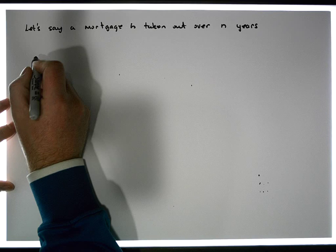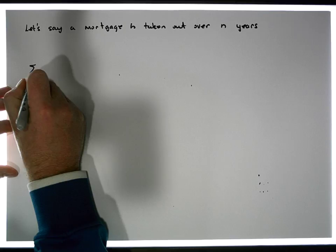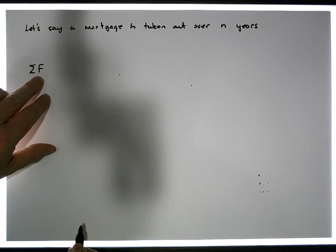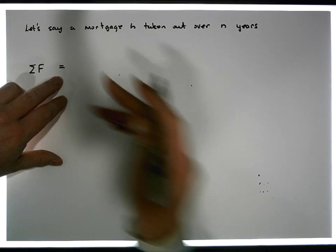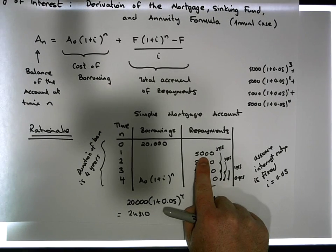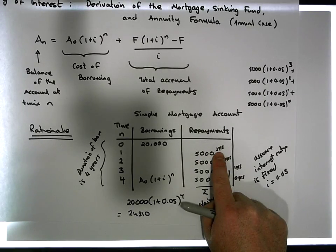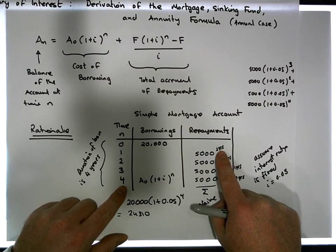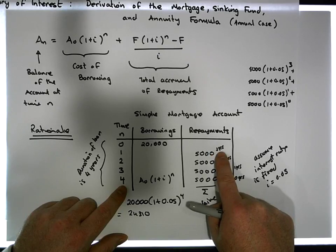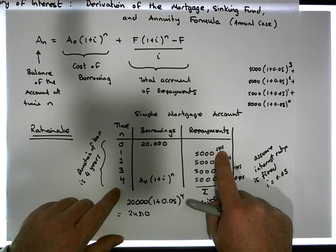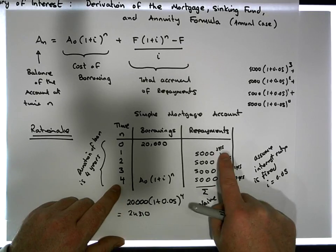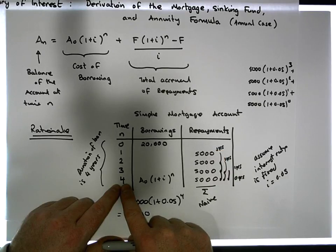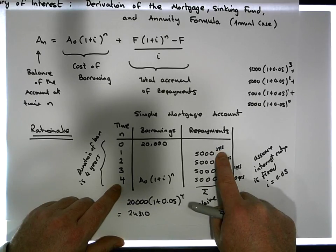The summation of our repayments — let's call that sigma F, where F is a repayment — should equal the fixed repayment amount compounded for a certain number of years. The mortgage was taken out over four years and the compounding for the first repayment was three years. If we take it out over N years, the compounding for the first repayment would be N minus one years.